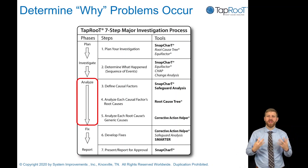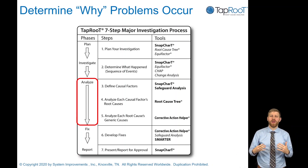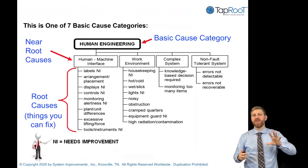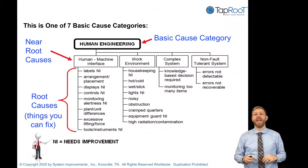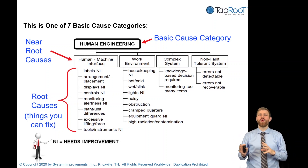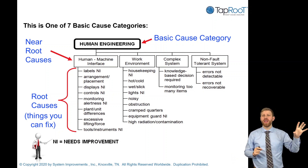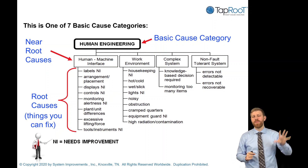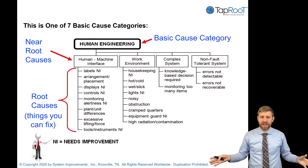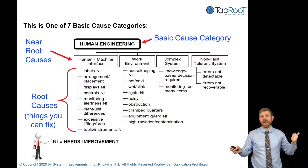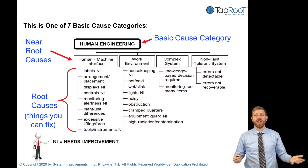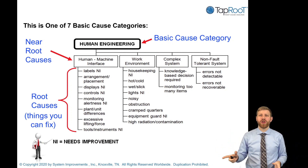This is where Taproot is different. We focus on the 'what' first, then the 'why.' When we get into the why, we take those mistakes, errors, and failures through the root cause tree, looking for missing best practices. There are seven basic cause categories in Taproot: training, procedures, quality controls, communications, management systems, human engineering, and work direction.